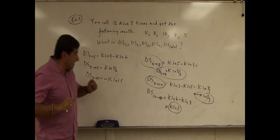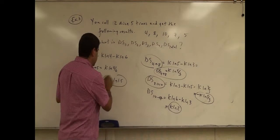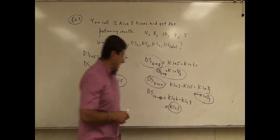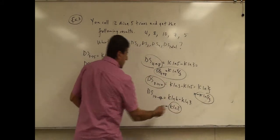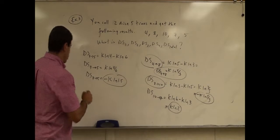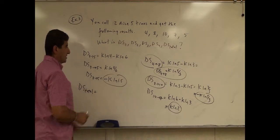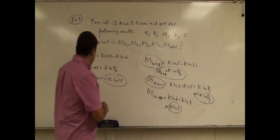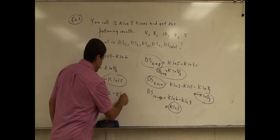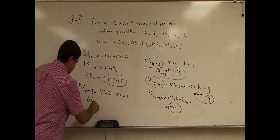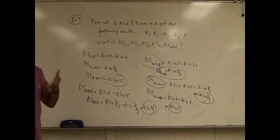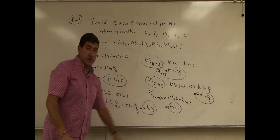So the net change in entropy: we had four changes — kln(5/3) and negative kln(5/3) perfectly cancel each other. Then we have kln(2) and negative kln(1.5). Since the first pair canceled, the total change in entropy of the universe, delta S total, equals kln(2) minus kln(1.5), which is kln(4/3). So the net change is positive.